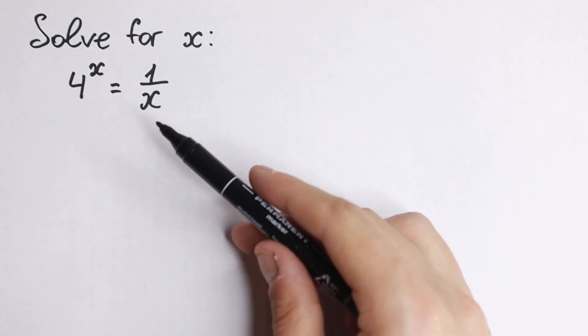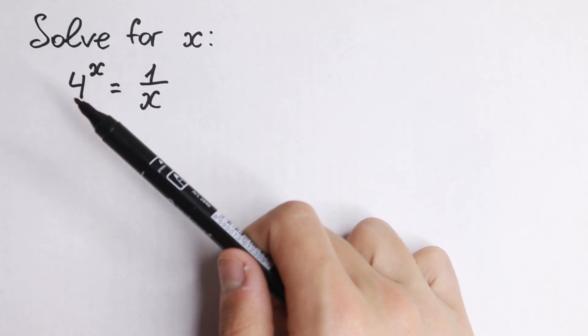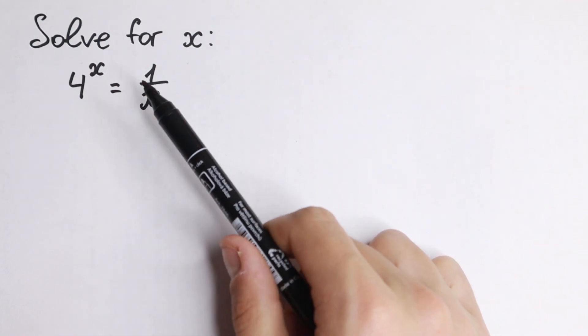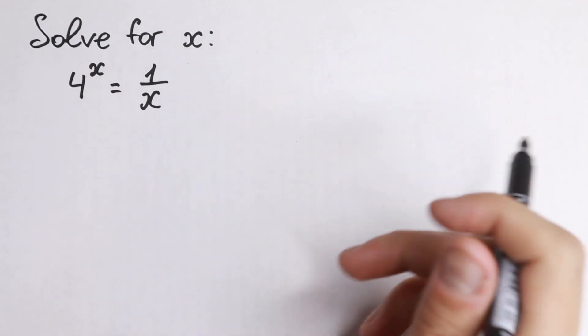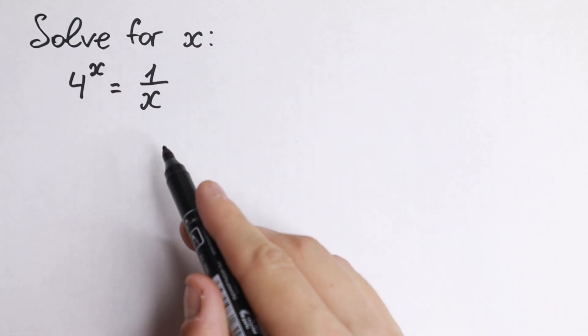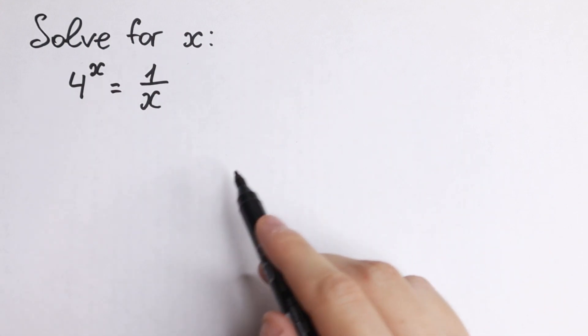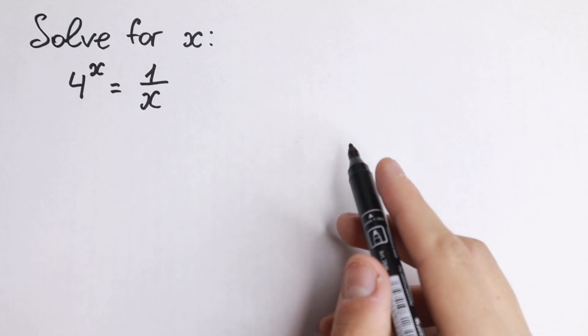We have 4 to the x equal to 1 over x. On the left hand side we have exponential function 4 to the x, and 1 over x on the right hand side. How can we work with it? This is not a common rule. I want to show you a really good trick for how we can find our x.